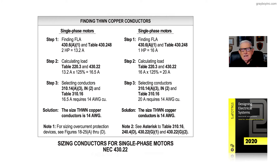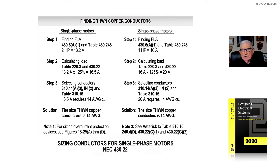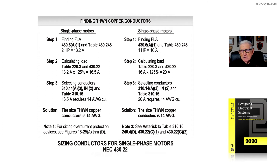Step three is selecting the conductors. Reference 310.14A3 Informational Note 2 — the golden rule to determine any load. In reference to Table 310.16, 20 amps requires number 14. But there is a restriction we have to look at: if we applied that solution, number 14 THWN copper conductors would be required.